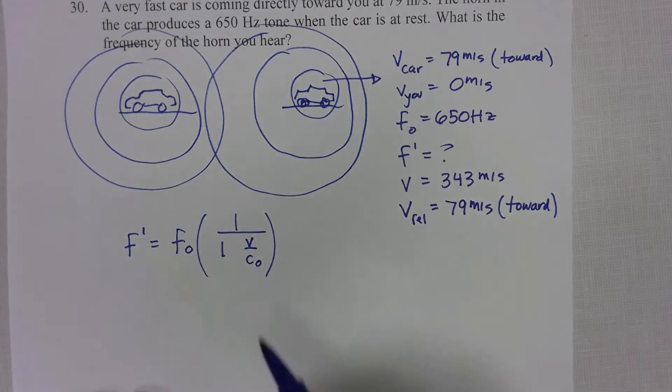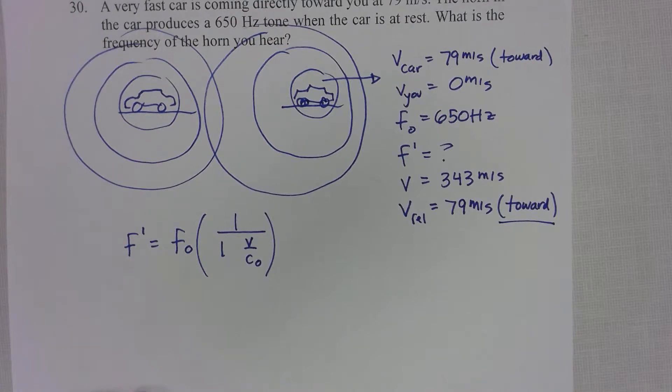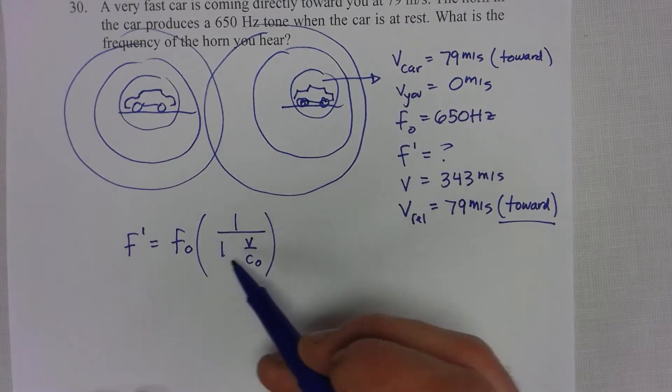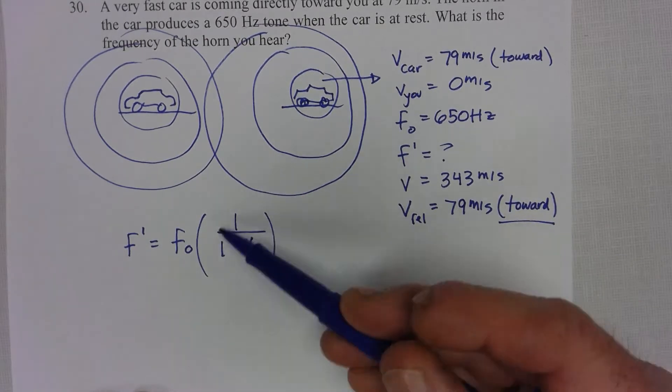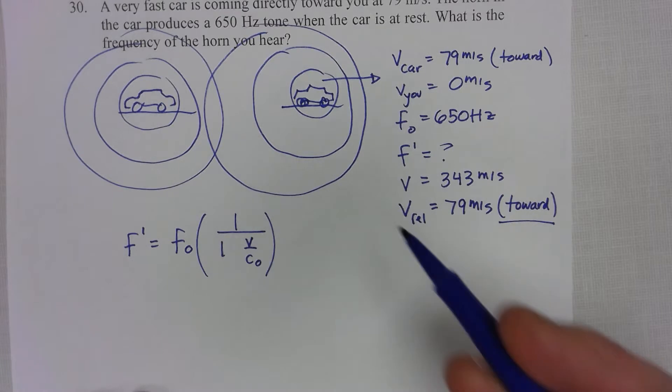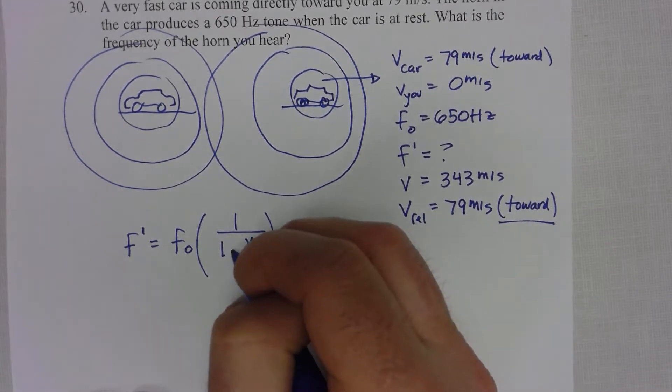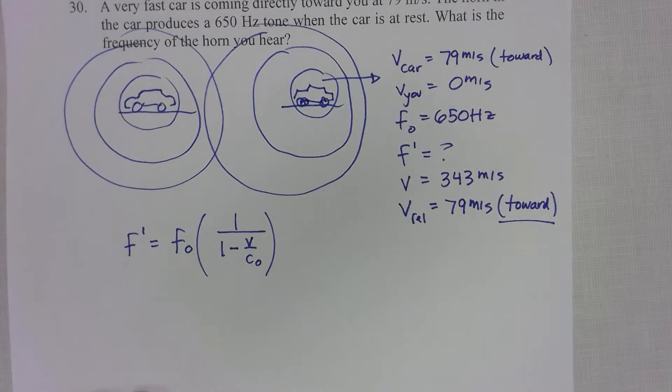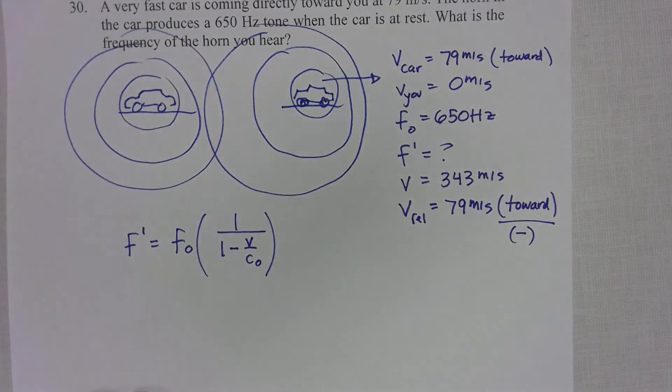Now this plus or minus I left blank because we have to decide what that's going to be based on this toward motion. Because the car is moving toward you, you're going to hear a higher frequency. That means this whole factor has to be some number bigger than 1. The only way you can get a number that's bigger than 1 is if what's in the denominator is smaller than 1. That's only going to happen if you subtract. So remember, toward motion you always use a minus in that denominator.